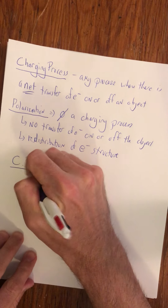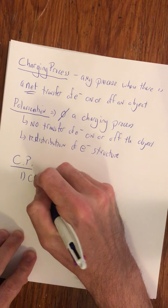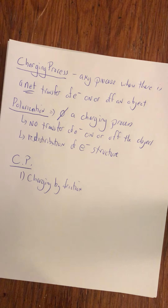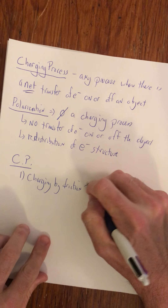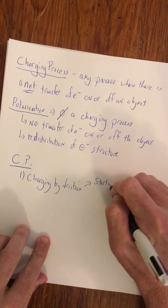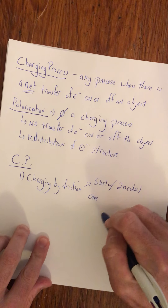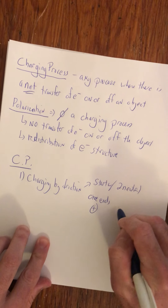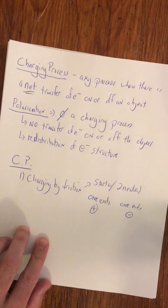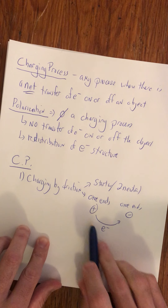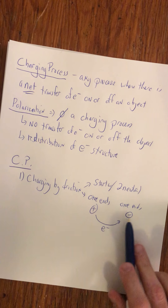So what were our charging processes? We had two so far. The first was charging by friction — rubbing the balloon with hair, or the green strip on fur, or the tie with glass. The important thing is we start with two neutral objects and end up with one positive and one negative, with electrons transferred from the positive thing to the negative thing.